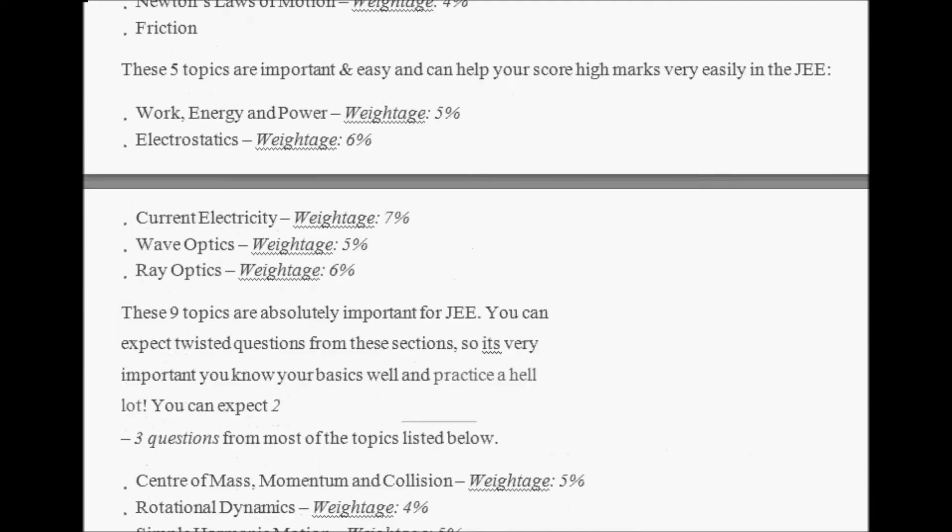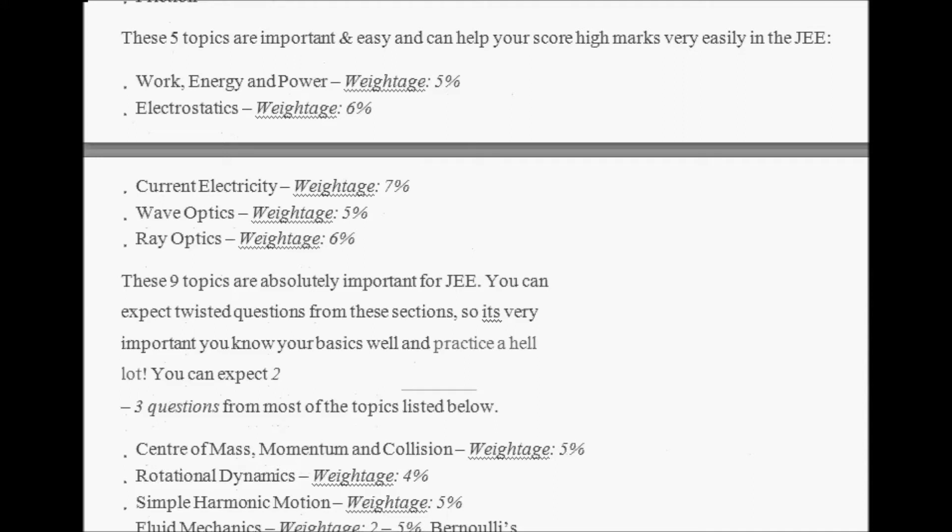These topics are important and easy and can help you score high marks easily in JEE. Let's talk about Work, Energy and Power - a very important chapter. You should work on it. This will be asked for around 5% or probably you can expect 1-2 questions. Next is Electrostatics - work on different types of problems like capacitors, charges, and fractions. It will be asked for 6%, maybe 2 questions. Sometimes you can expect 3 questions also.